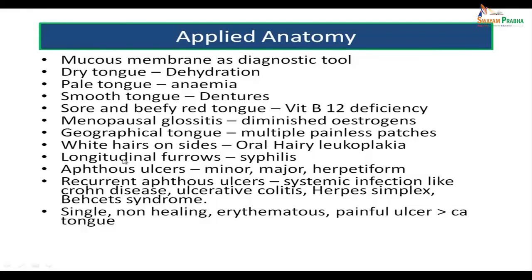Longitudinal furrows on the dorsal surface of the tongue are indicative of syphilis. Multiple ulcers on the surface of the tongue are called aphthous ulcers — they may be minor ulcers (less than 2 mm in diameter), major aphthous ulcers (more than a centimeter in diameter), or herpetiform ulcers — multiple small ulcers which coalesce to form a larger ulcer.